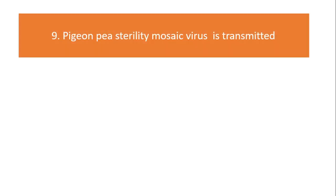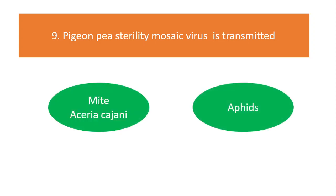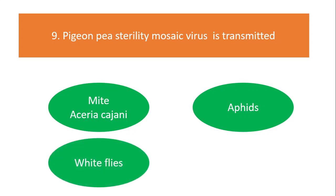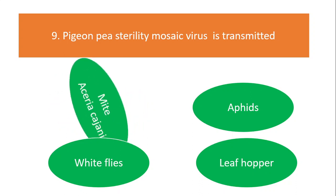Pigeonpea sterility mosaic virus is transmitted by: mite, aphids, whiteflies, or leafhoppers? The answer is mites.